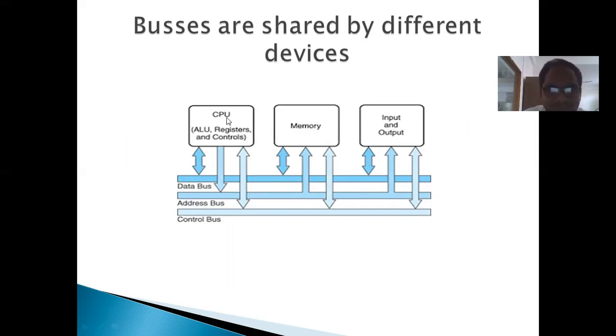We can see that these are the three buses: data bus, address bus, and control bus. And this is the data transfer between these input devices, the memory, and the CPU via bus.